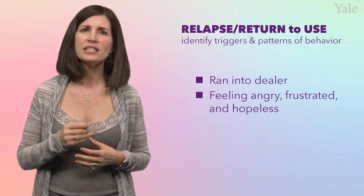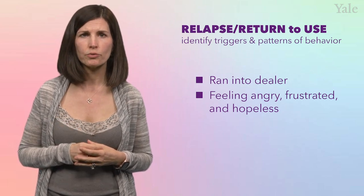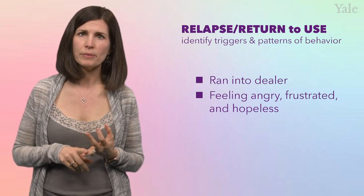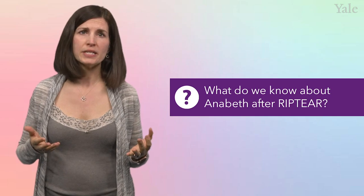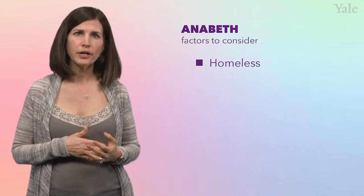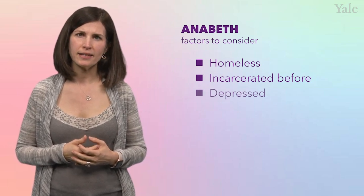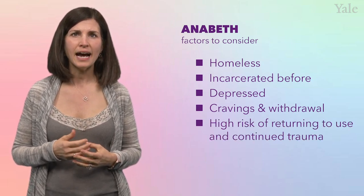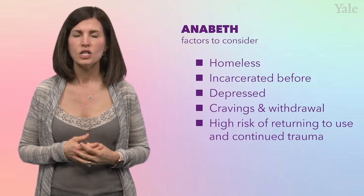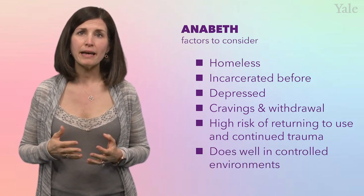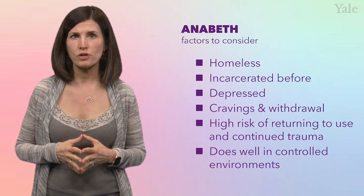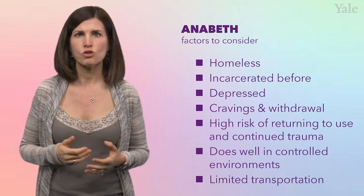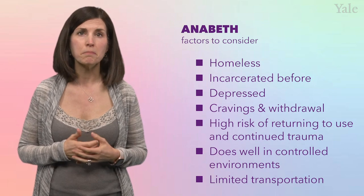Identifying points of relapse can help identify triggers and patterns to avoid when working with a patient on relapse prevention. For example, finding employment and avoiding dealers will be helpful in Annabeth's treatment planning. So what do we know about Annabeth after going through rip-tear? To summarize, we know she's currently homeless and has been incarcerated before. Annabeth is depressed and experiencing intense cravings and cocaine withdrawal. She's at high risk of return to use and high risk of experiencing continued trauma without treatment. She's done well in a controlled environment, but relapsed within months of release in the context of social stressors, including not having a home, money, or a job. She has limited access to transportation, so getting to and from daily outpatient treatment might be difficult.